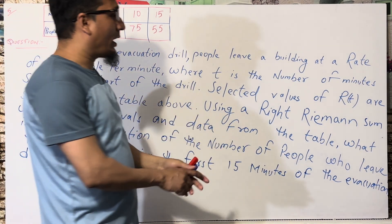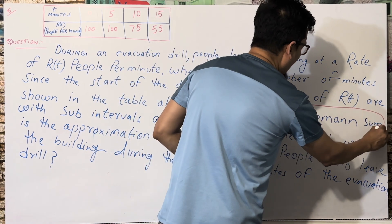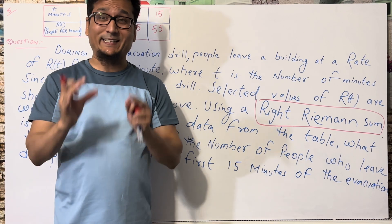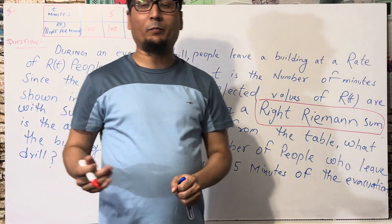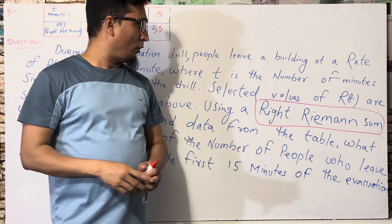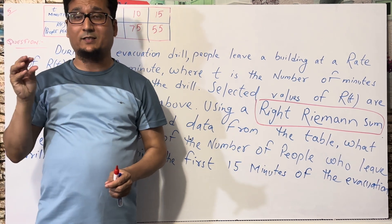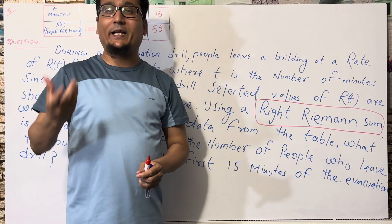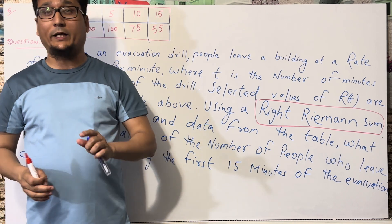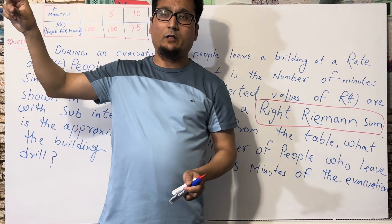This is a very important point: we have right Riemann sums and we have left Riemann sums. I'm not going to tell you the full details about Riemann sums right now - I will explain in my next video. Just to give you a brief concept: if you have a curve and you need to find the area, you can find it using rectangles or trapezoids. Riemann sum is essentially finding the area under a given curve.